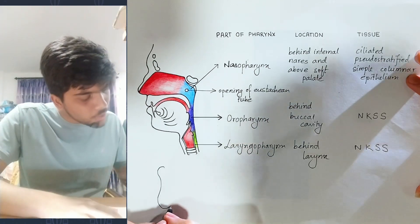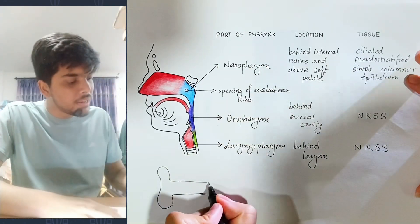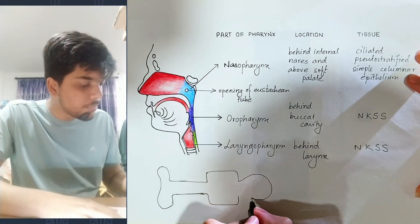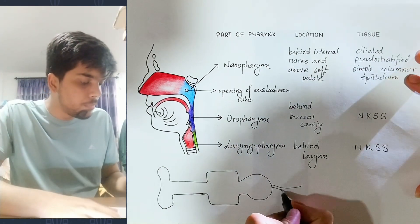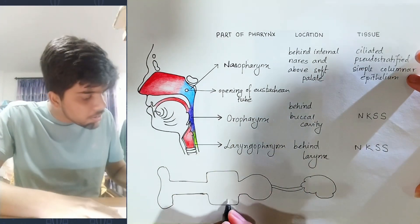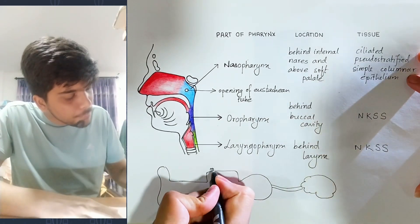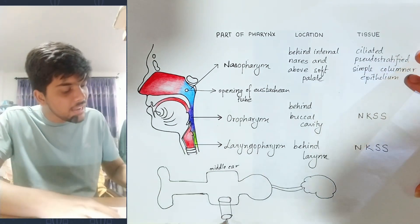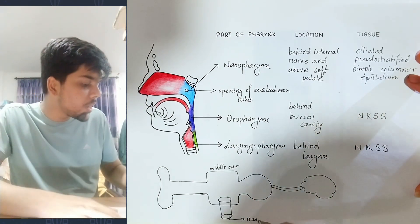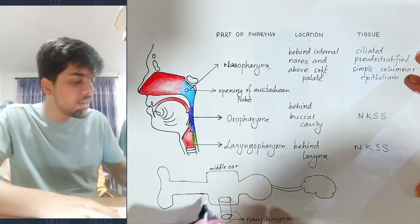This is your ear — external ear, middle ear, and internal ear shown in simple and detailed diagrams. The auditory nerve connects to the brain. The nasopharynx is connected to the middle ear through the eustachian tube.